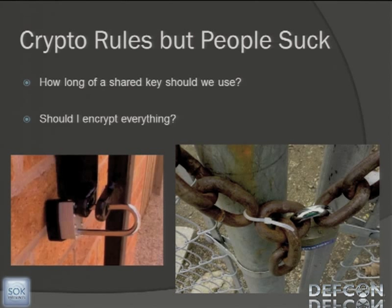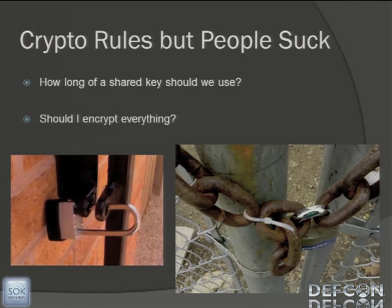Crypto does rule — it absolutely rocks. The math behind it is amazing. But by definition, if you have a 128-bit key, it should take two to the 127th tries on average to crack it. No supercomputer is going to be doing that — that takes forever.